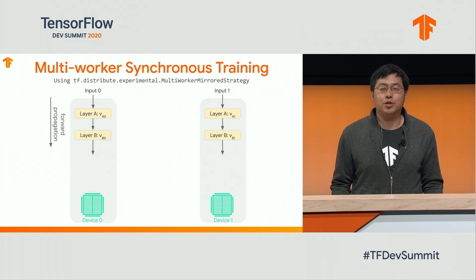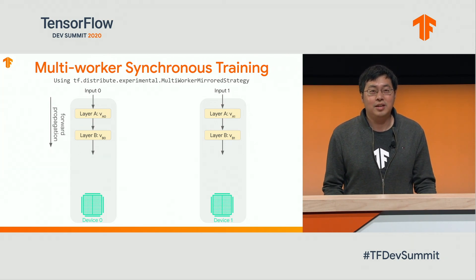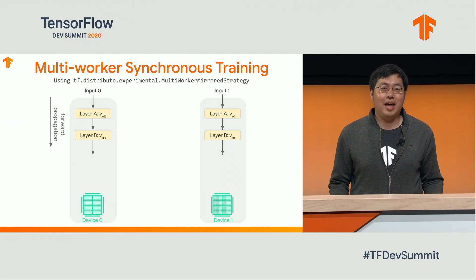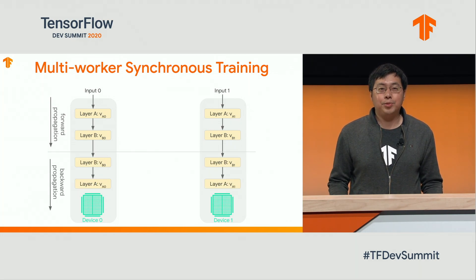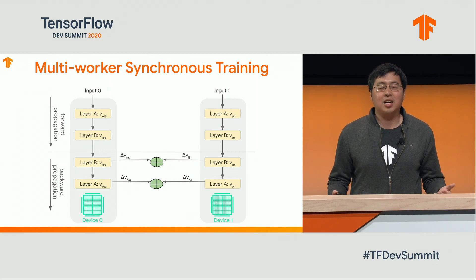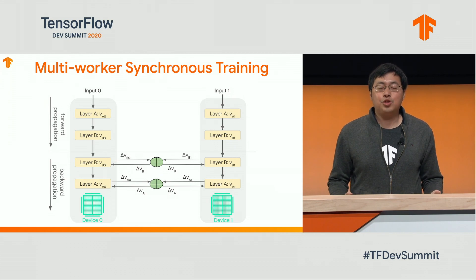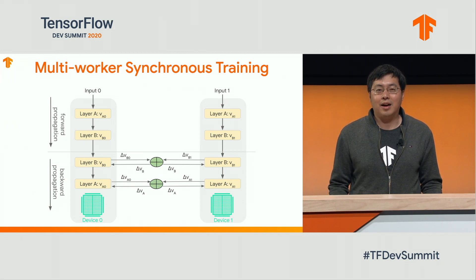We are leveraging the native TensorFlow distributed training support, which is multi-worker mirrored strategy. In the figure, we have two GPU devices on two different hosts, using a simple deep learning model with two layers A and B, each with one variable. Each GPU receives a subset of the training data and computes the forward pass using its local copy of model variables. Then it runs the backward pass to calculate gradients of each layer. After gradients are calculated, all devices communicate using all-reduce algorithms to aggregate the gradients. After aggregation, each device gets the same aggregated gradients and uses them to update local variables. It's called synchronous because every device must aggregate gradients, get the same aggregated gradients, and update variables before proceeding to the next training step.